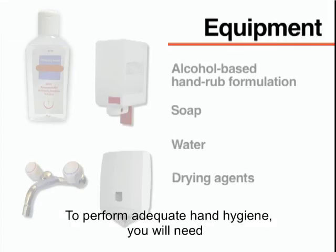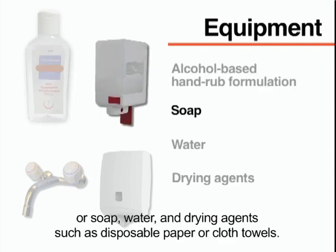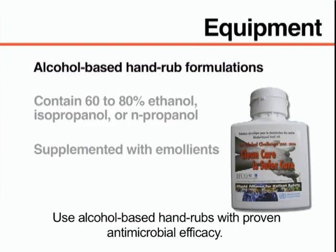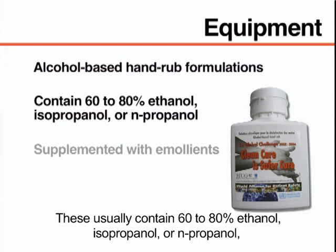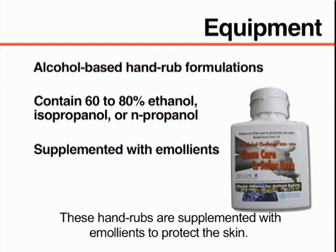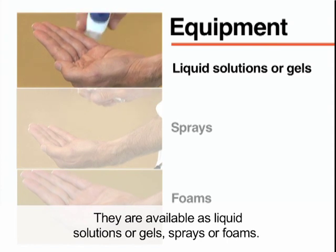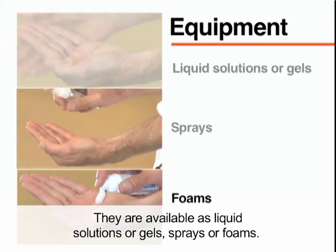To perform adequate hand hygiene, you will need an alcohol-based hand rub formulation or soap, water, and drying agents such as disposable paper or cloth towels. Use alcohol-based hand rubs with proven antimicrobial efficacy. These usually contain 60–80% ethanol, isopropanol, or n-propanol, or a combination of these products, supplemented with emollients to protect the skin. They are available as liquid solutions or gels, sprays, or foams.